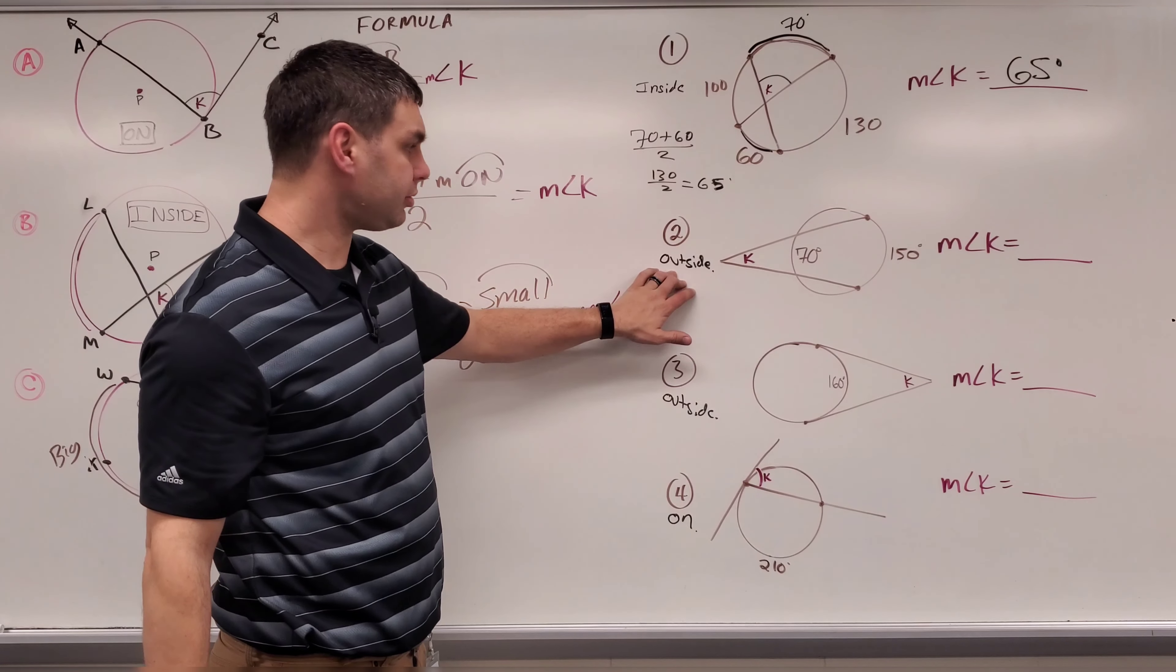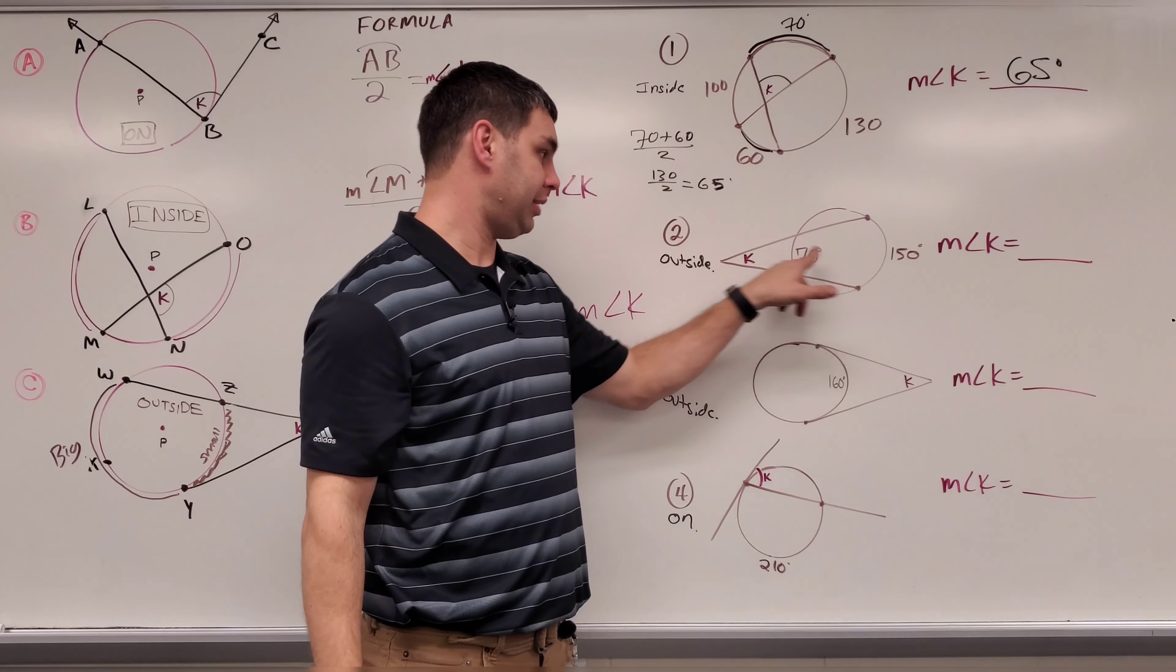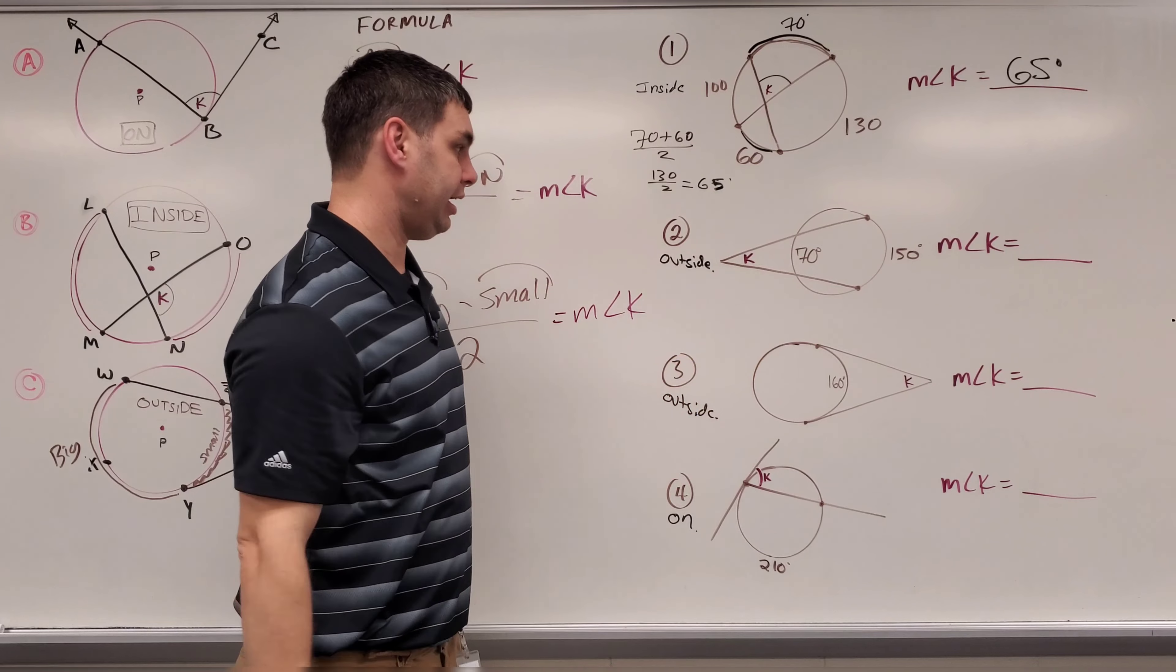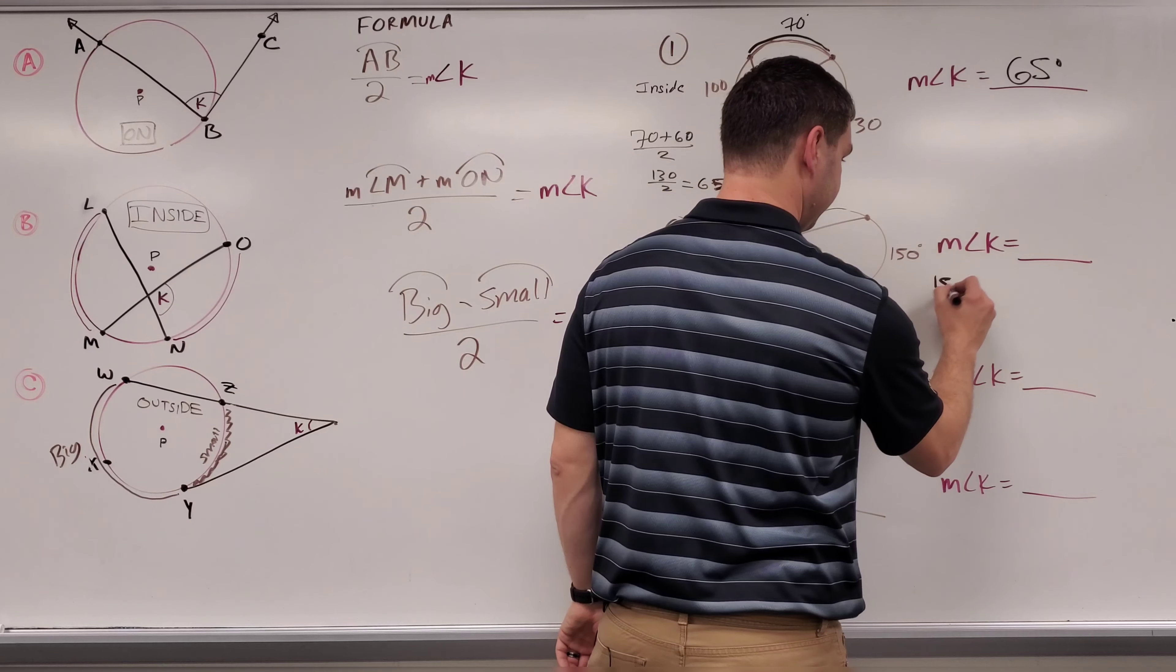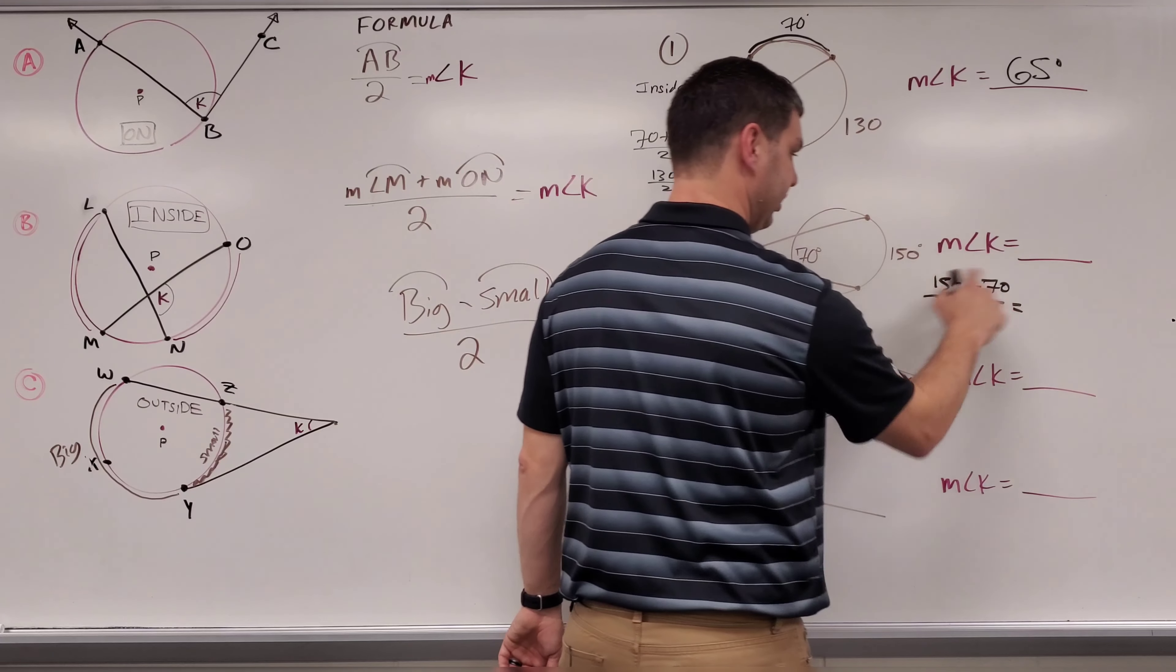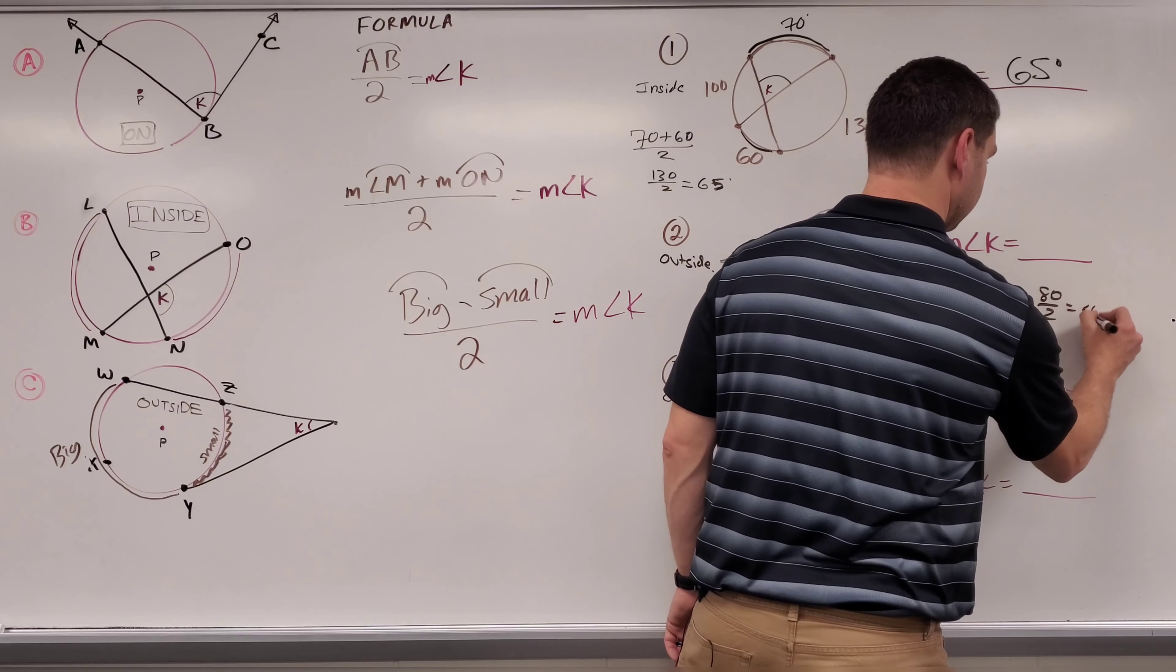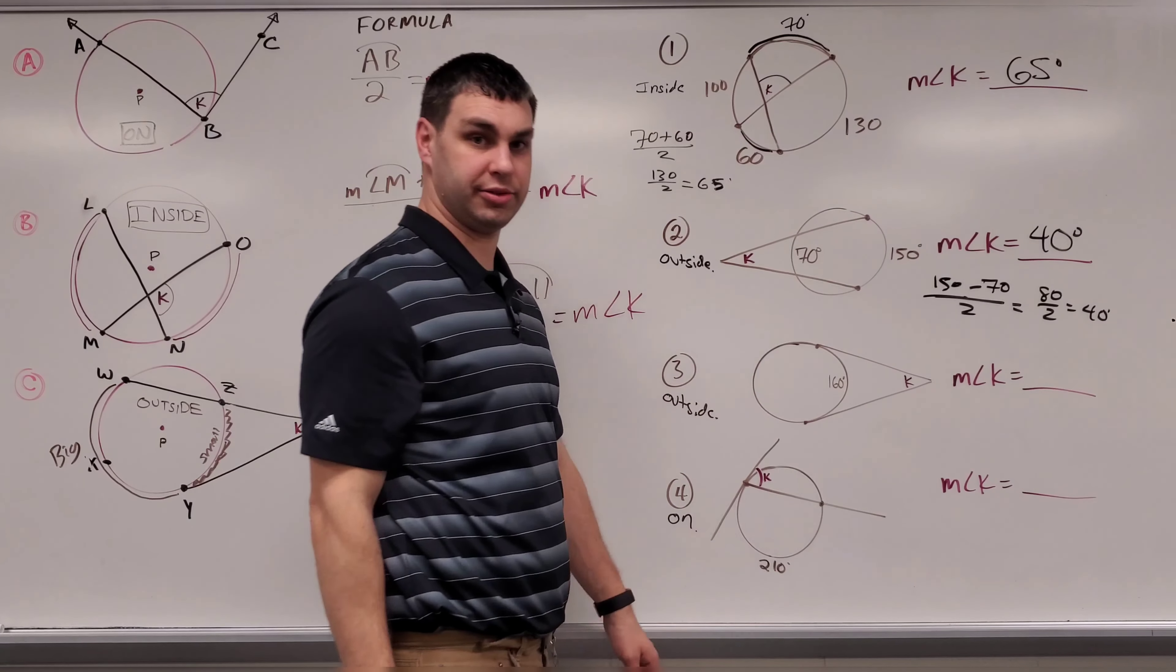Number two, this one is outside the circle, and so to find the one that's outside, we have to take the big arc minus the small arc that's on the inside of our angle, and divide that by two. So my big arc is 150 minus the small arc, 70, divided by two. 150 minus 70 is 80. 80 divided by two is 40. So this angle, angle K right there, would be 40 degrees.